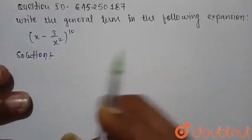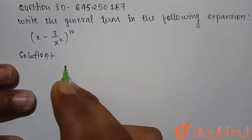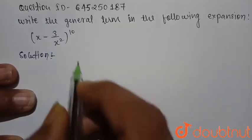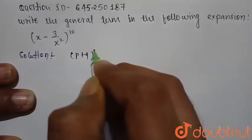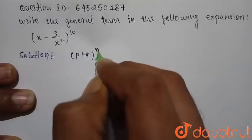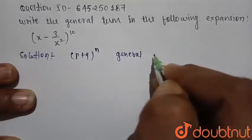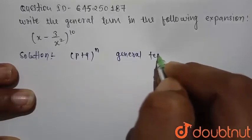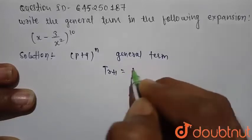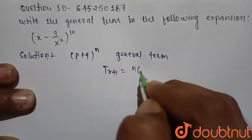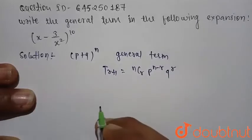Write the general term in the following expansion: (x minus 3 divided by x squared) raised to power 10. First we consider the general binomial expansion, that is (p plus q) raised to power n. The general term of this binomial expansion is T(r+1), which is equal to nCr times p raised to power (n minus r) and q raised to power r.